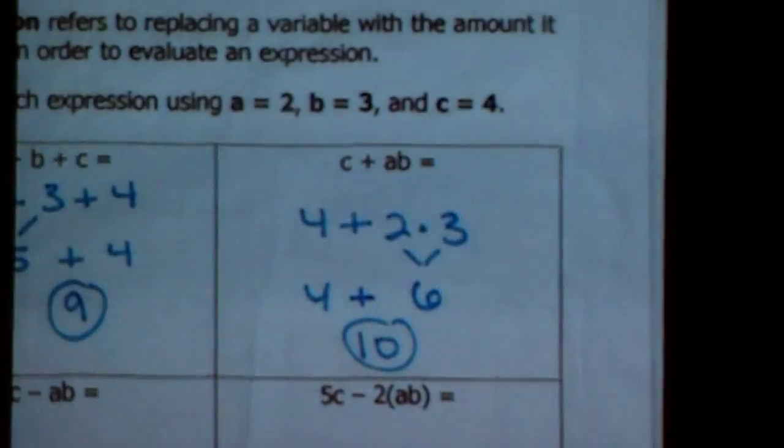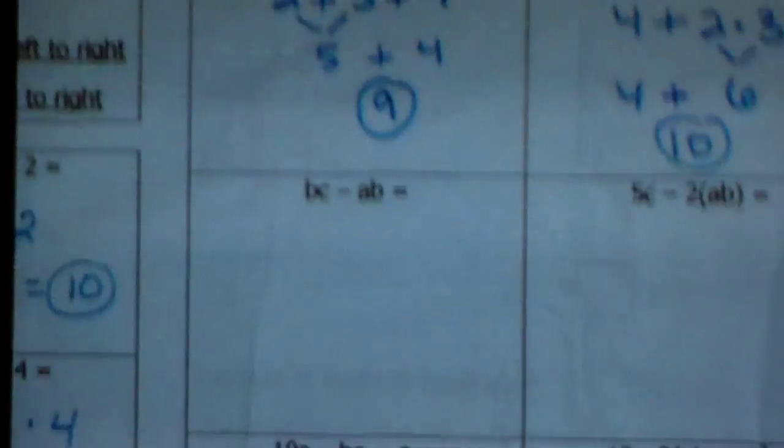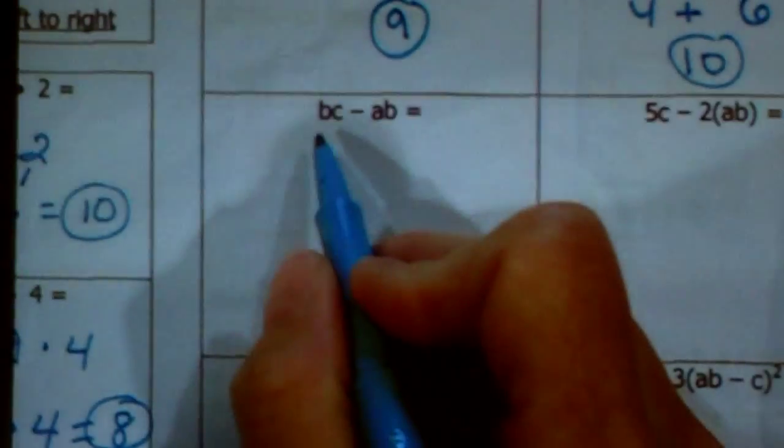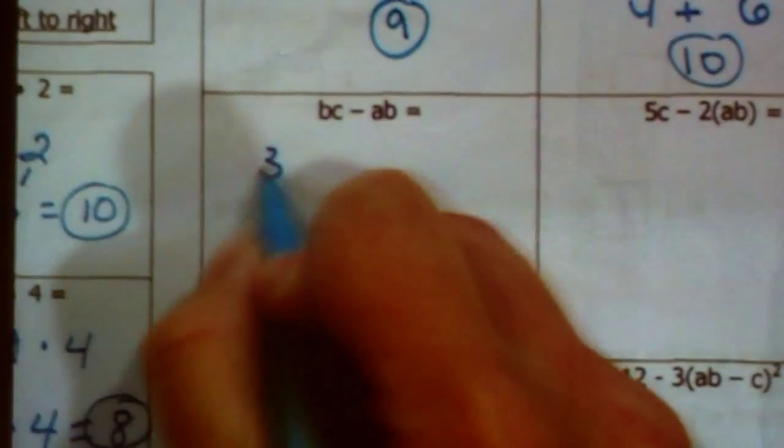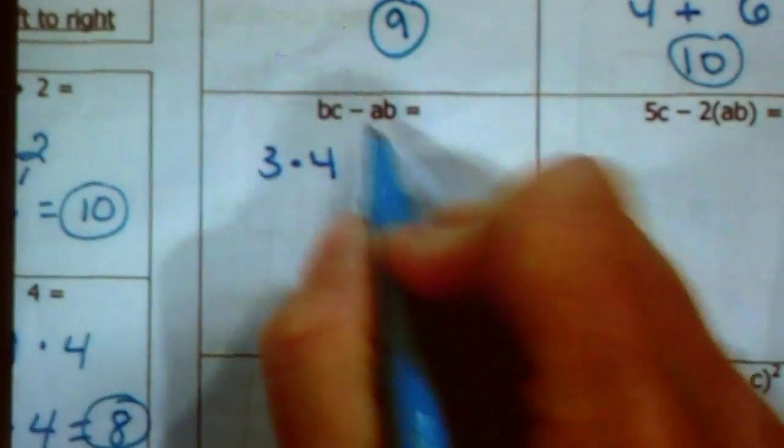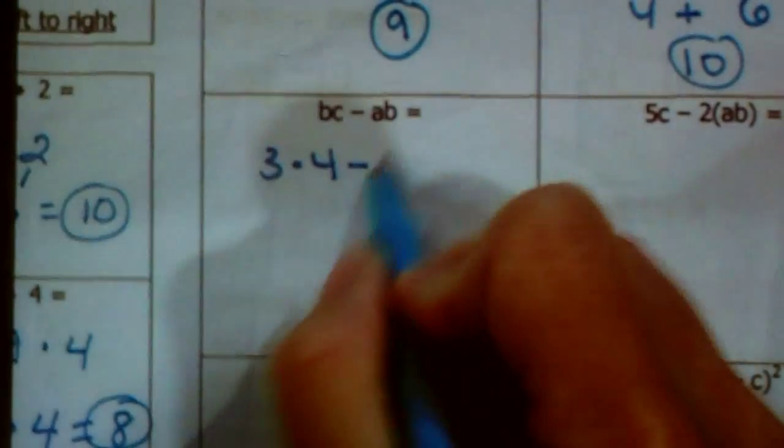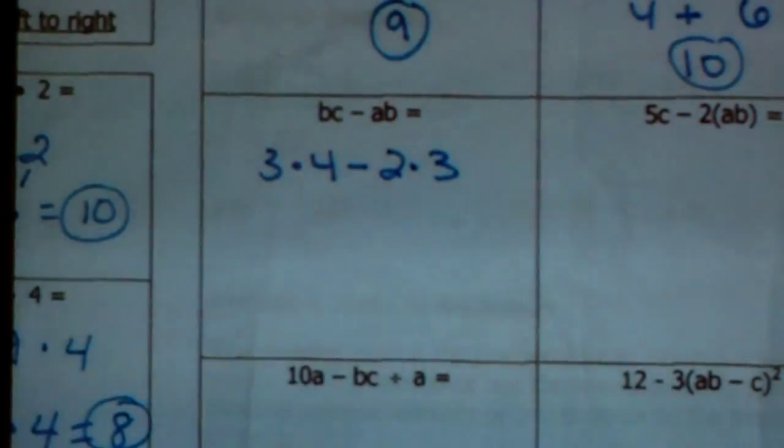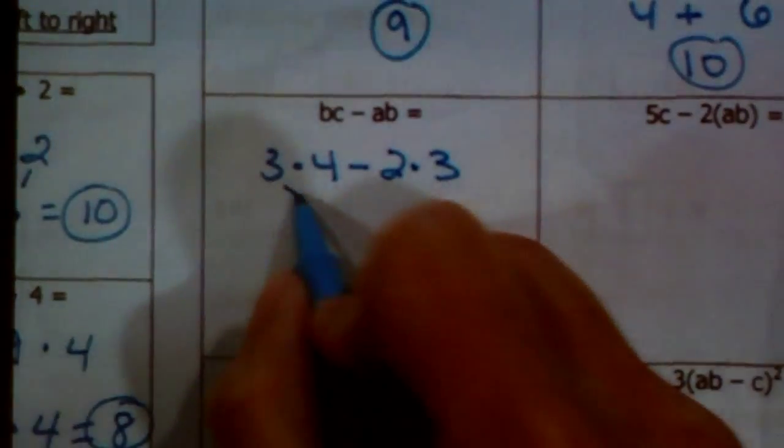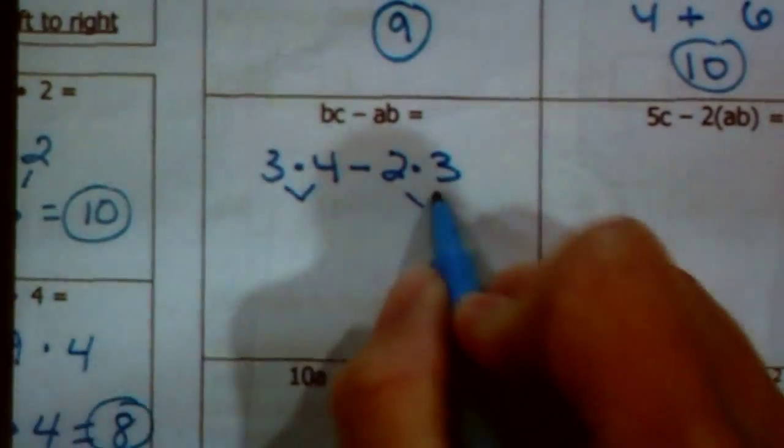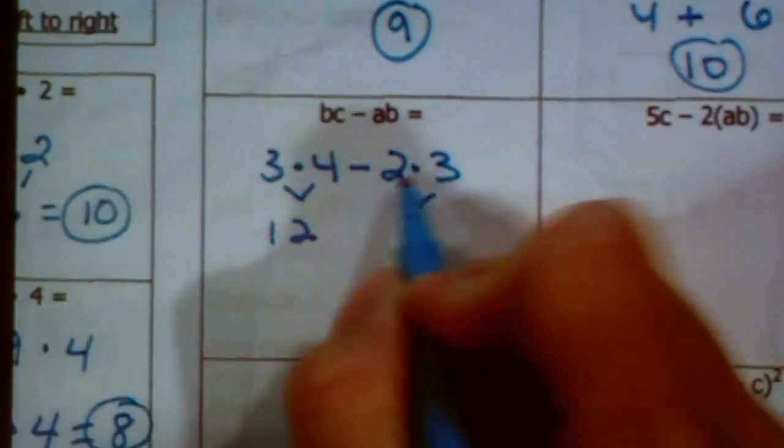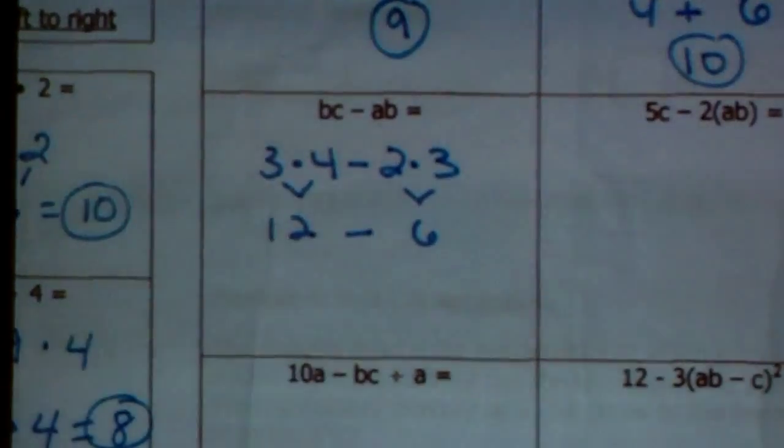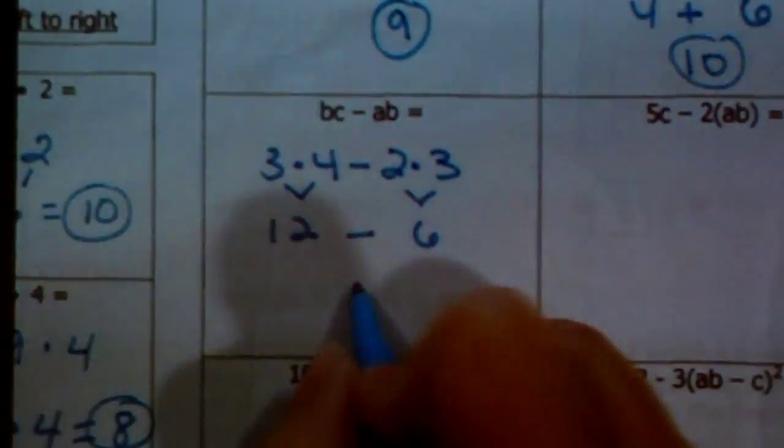So now I have BC minus AB. Again, B is next to C. That means multiplication. So what I'm really doing here is taking 3 times 4, bring down subtraction, AB would be 2 times 3. So I have multiplication, I have subtraction. You need to solve all multiplication before subtraction, so I'm going to go ahead and do these both here. 3 times 4, that's 12. 2 times 3, that's 6. Now I can go ahead and subtract, because the multiplication is all done. 12 minus 6 is 6.